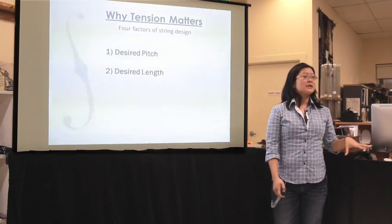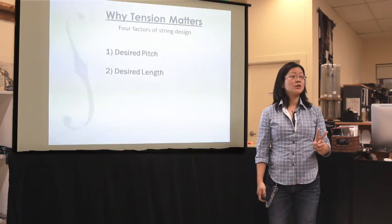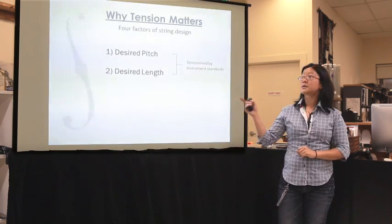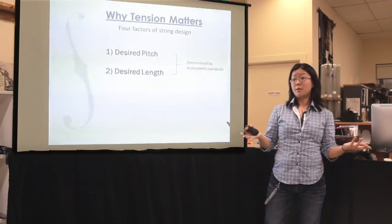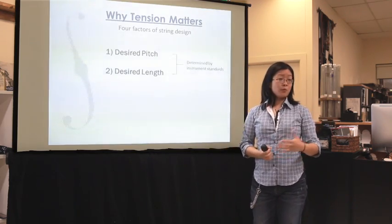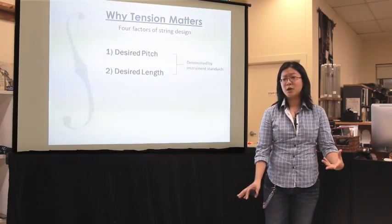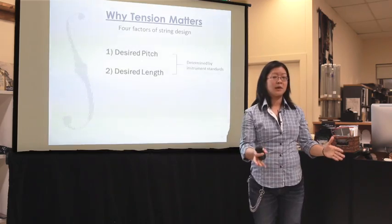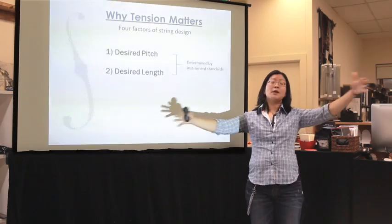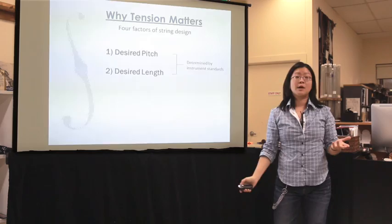There are four factors of string design. Two of them are pretty much set by industry standards: the desired pitch and the desired length. So if we're going to make a full-size 4/4 cello string — an A, D, G, or C — we're not going to make a B-flat or C-sharp string. We're going to make the industry-prescribed string at the standard 4/4 cello length. Those things are set; we can't mess around with them.